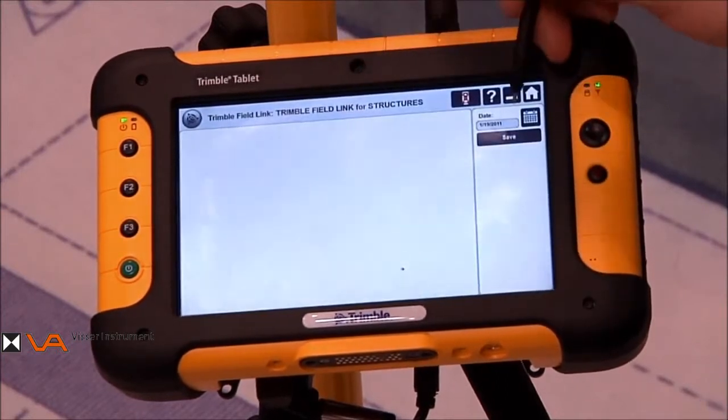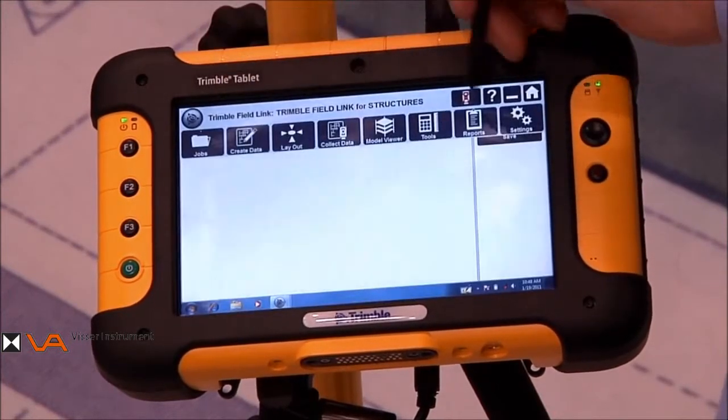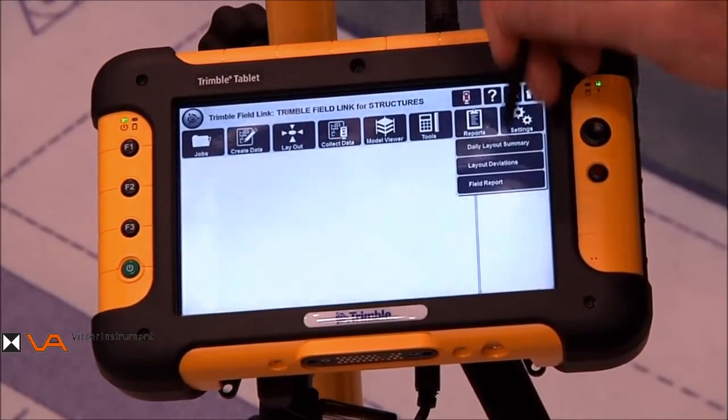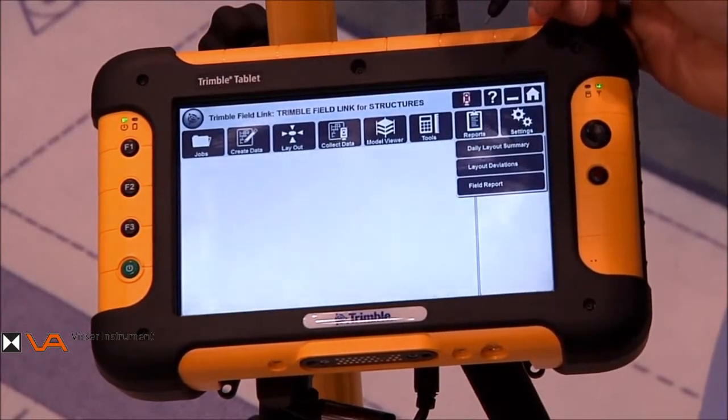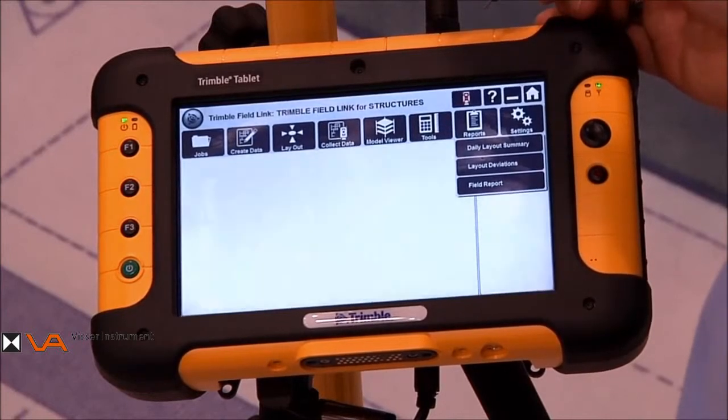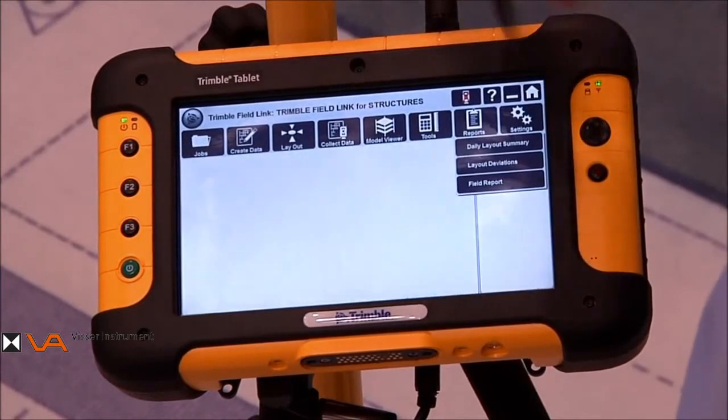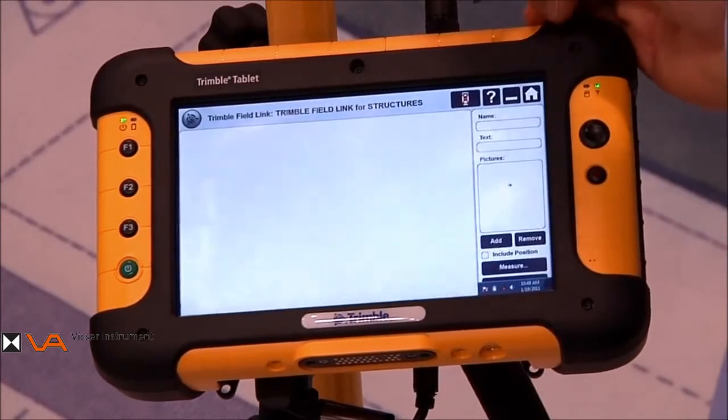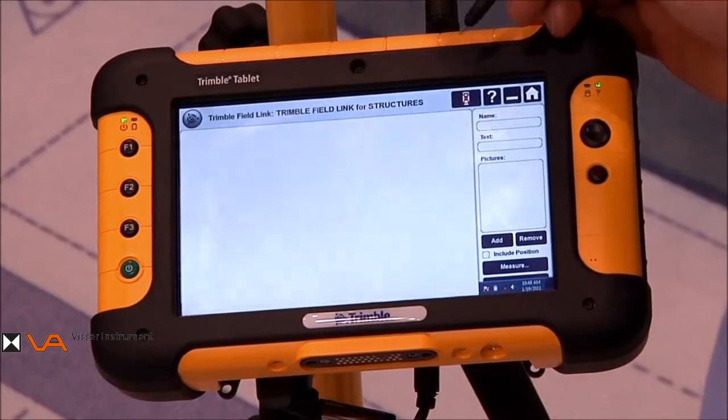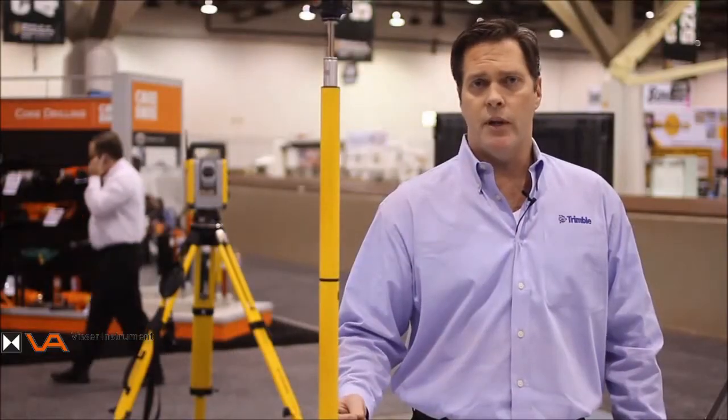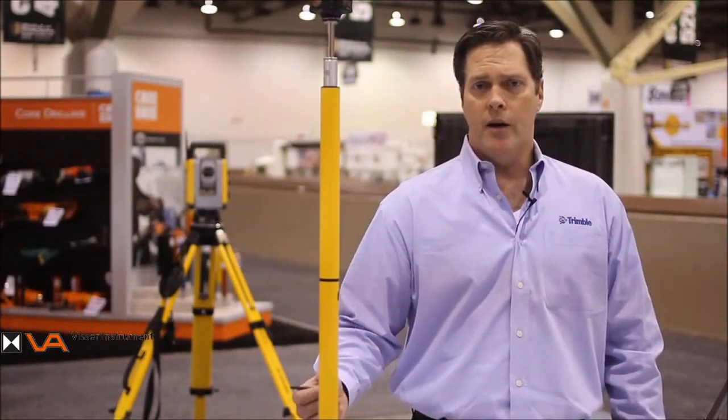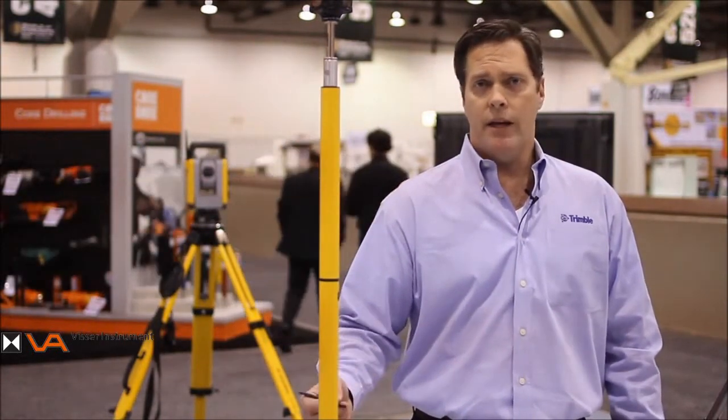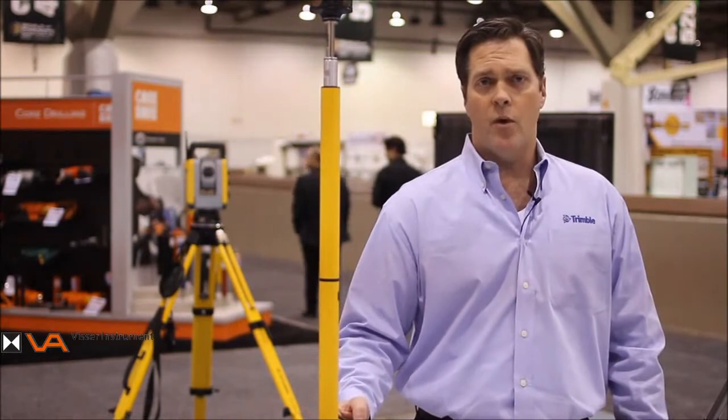The other reports that we have are also accessed through the report button. Those reports are layout deviations, which show us all the points that were laid out, whether they were intolerant or out of tolerance. The last report is the field report. This might be the most important report. This allows us to report field conditions, conflicts, RFIs, in a format that can be sent directly back to the office to immediately get decision and action so that we can move forward in the project.